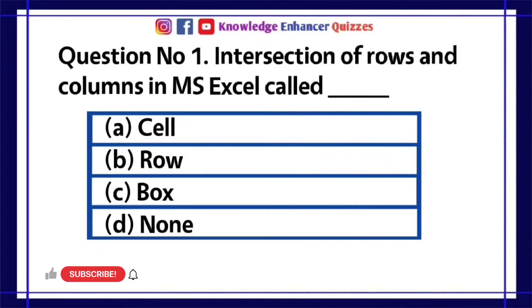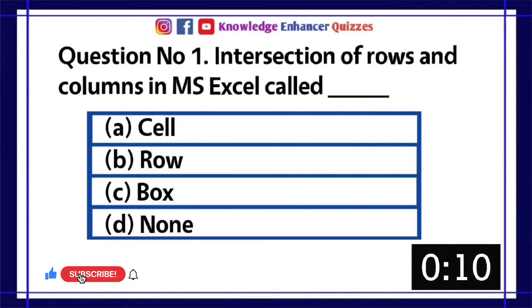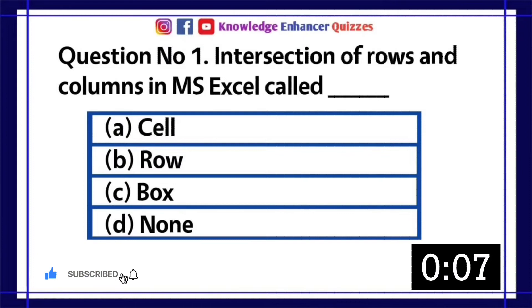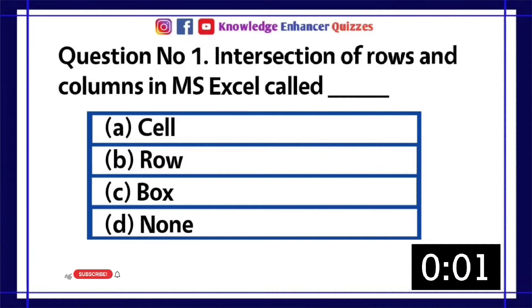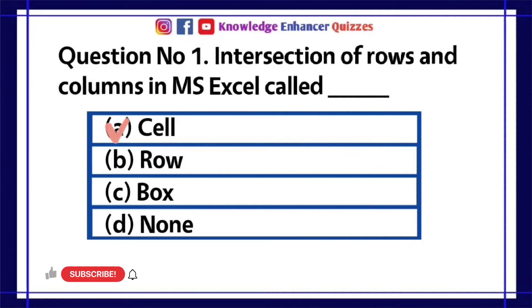Question number 1: Intersection of rows and columns in MS Excel is called dash. A. Cell  B. Row  C. Box  D. None. Option A is the right answer.